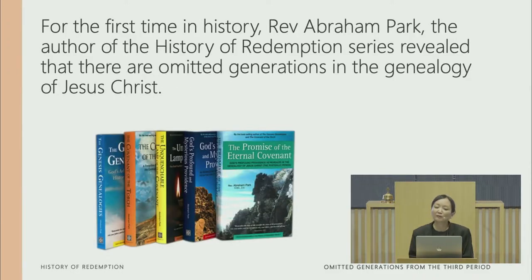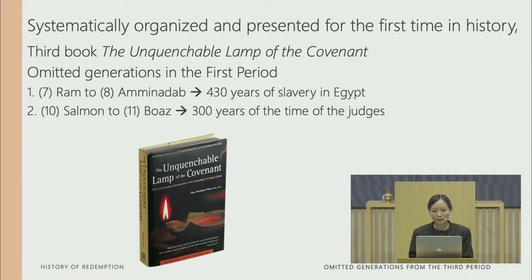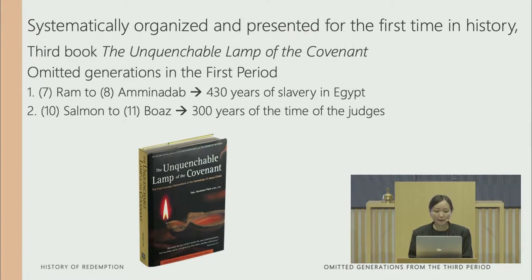For the first time in history, Reverend Abraham Park, the author of the History of Redemption series, revealed that there are actually omitted generations in the genealogy of Jesus Christ. In the third book, The Unquenchable Lamb of the Covenant, he revealed two periods of omitted generations: from Ram to Aminadab — the 430 years of slavery in Egypt — and from Salmon to Boaz, covering the 300 years of the time of the judges.